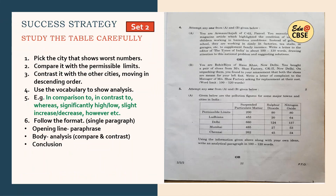Here is the first example. As I told you, I've taken this question from the question paper. Let's quickly read the question first. So given below are the pollution figures for some of the major towns and cities in India. Permissible limits are given there, and the cities are Ludhiana, Delhi, Mumbai, and Chennai. Suspended particulate matter is given, then sulfur dioxide and nitrogen dioxide — the contents and levels are given. The permissible limit is 280 and 80.